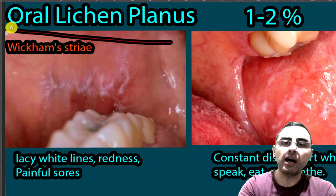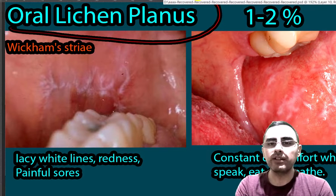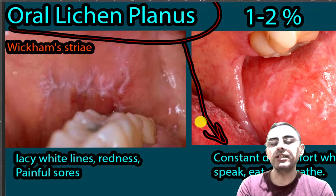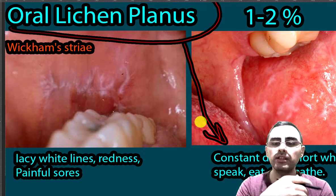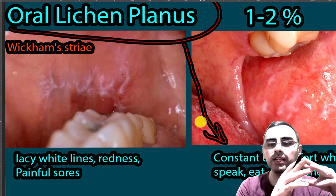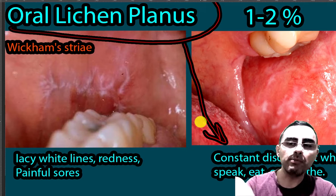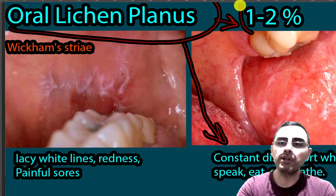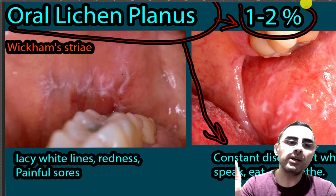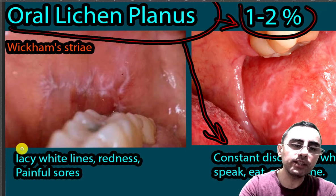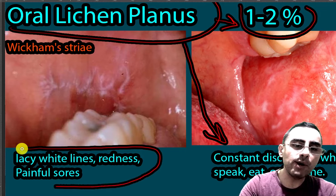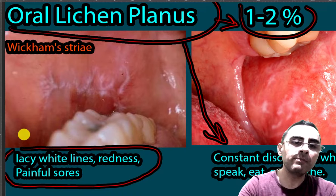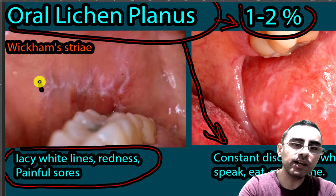Oral lichen planus is an autoimmune disease which affects the oral cavity. It's important because it can cause constant discomfort and burning sensation in the mouth while a person is speaking, eating, or even breathing. It affects around one to two percent of the global population, so it's a common problem. The most important characteristics are lacy white lines, redness, and sometimes painful sores, especially these white lines in the oral mucosa.